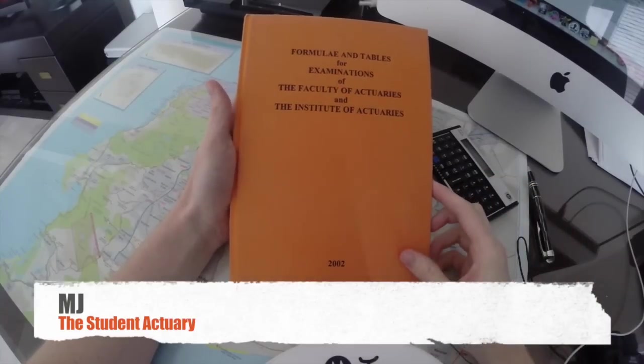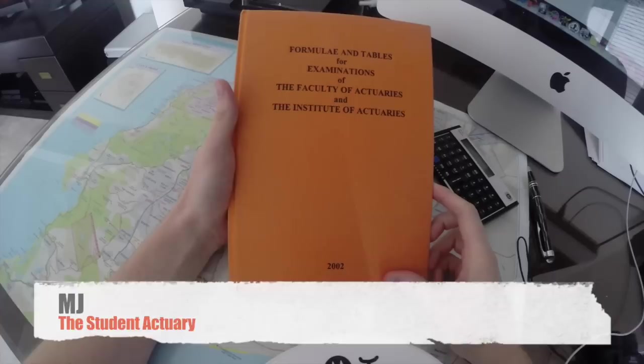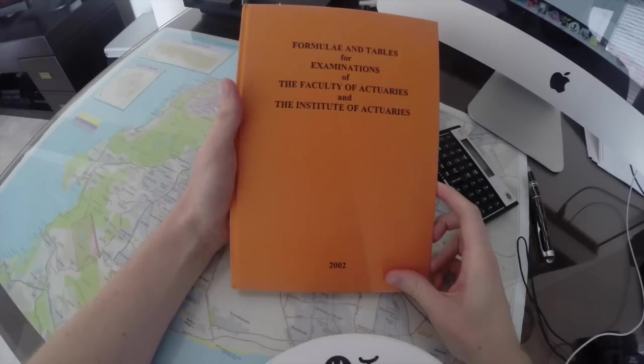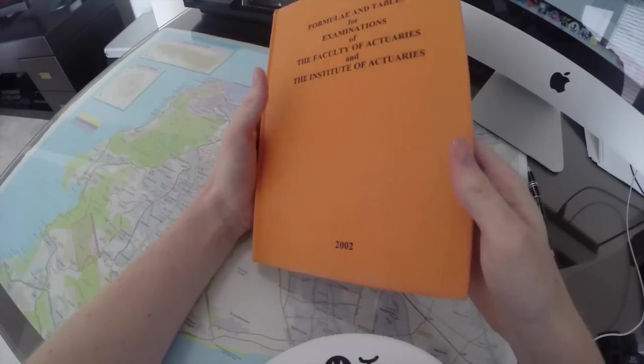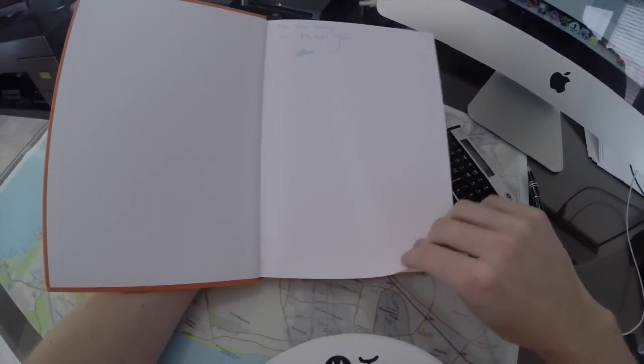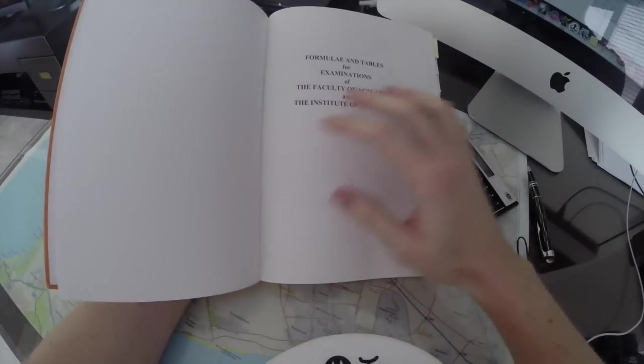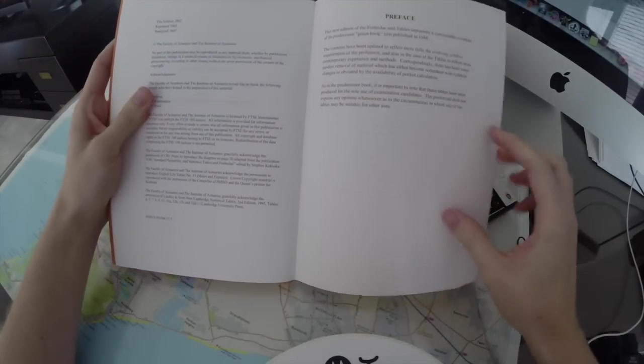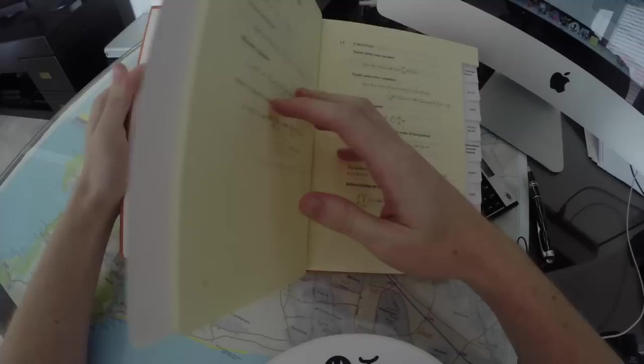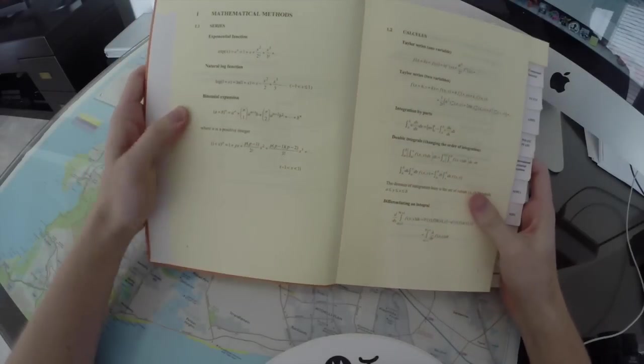Hey guys, it's MJ, the student actuary, and we're going to go through all the actuarial formulas that you're ever going to come across in this profession. They can all be found in this orange book, which you can take into the exam. So you don't have to learn any of these formulas off by heart, but you're going to be using them so much that you will know them off by heart. Without further ado, let's look at the formulas.